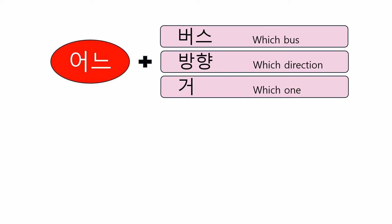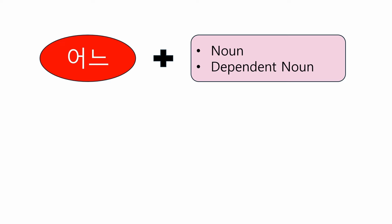In this way, 어느 should always be followed by a noun or dependent noun. 어느 has several meanings, but today let's look at the two meanings that are used most commonly and frequently. Okay, let's get started.